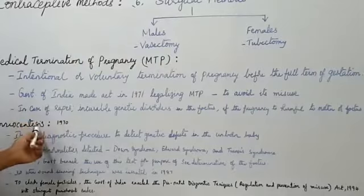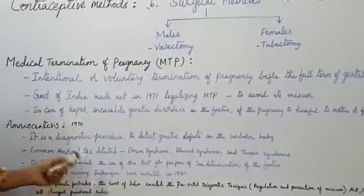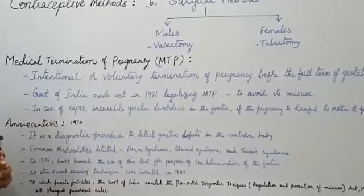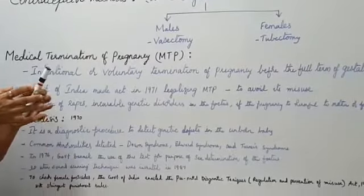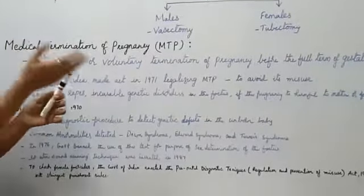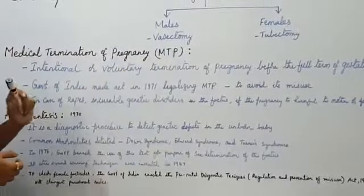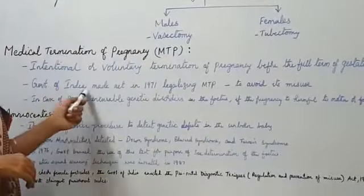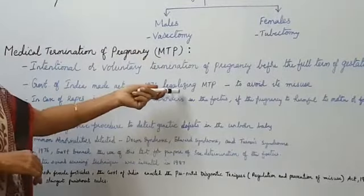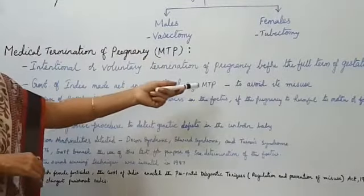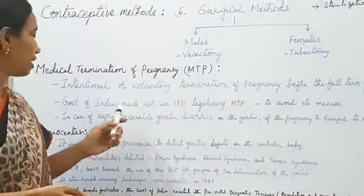It is identified by amniocentesis or ultrasound scanning techniques, and the diseases are identified, they go for the medical termination of pregnancy. The government of India made an act in 1971, legalizing MTP to avoid misusing of it.